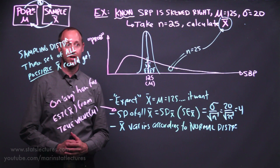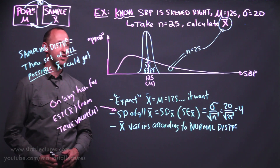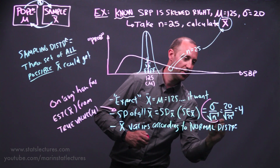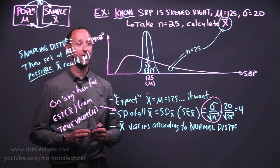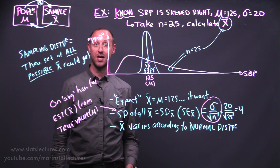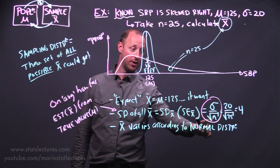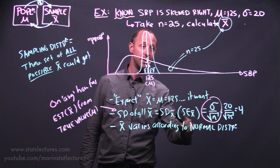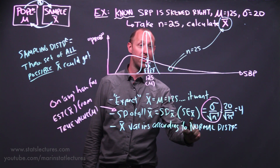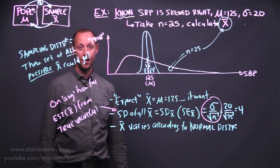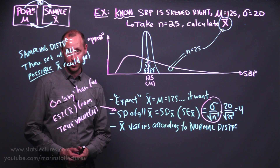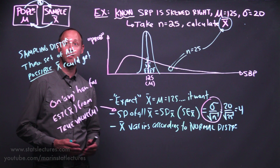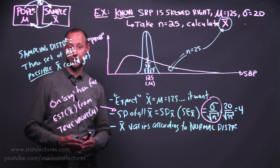One final note: take note of what happens to the standard deviation of the mean — the standard error — as n, our sample size, becomes larger and larger. As our sample size becomes bigger and bigger, the standard error is going to become smaller and smaller. Hopefully this makes intuitive sense: as we take more and more data, our estimates should be closer and closer to the true values.